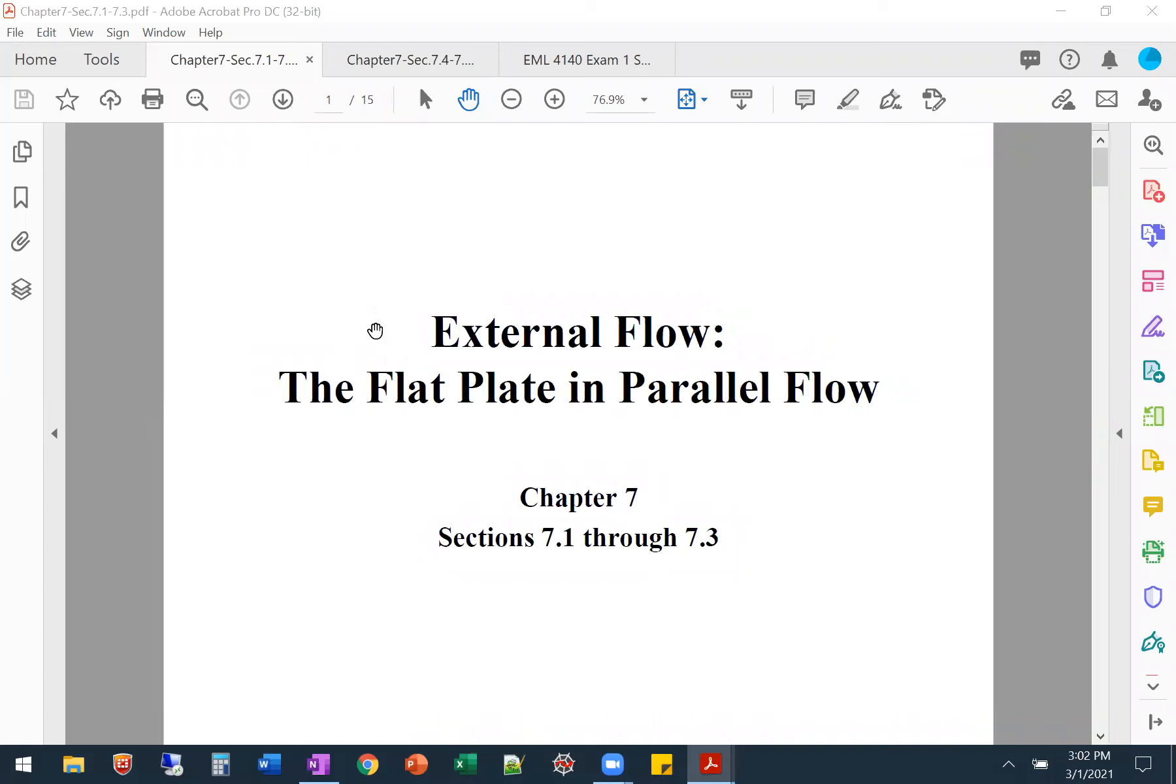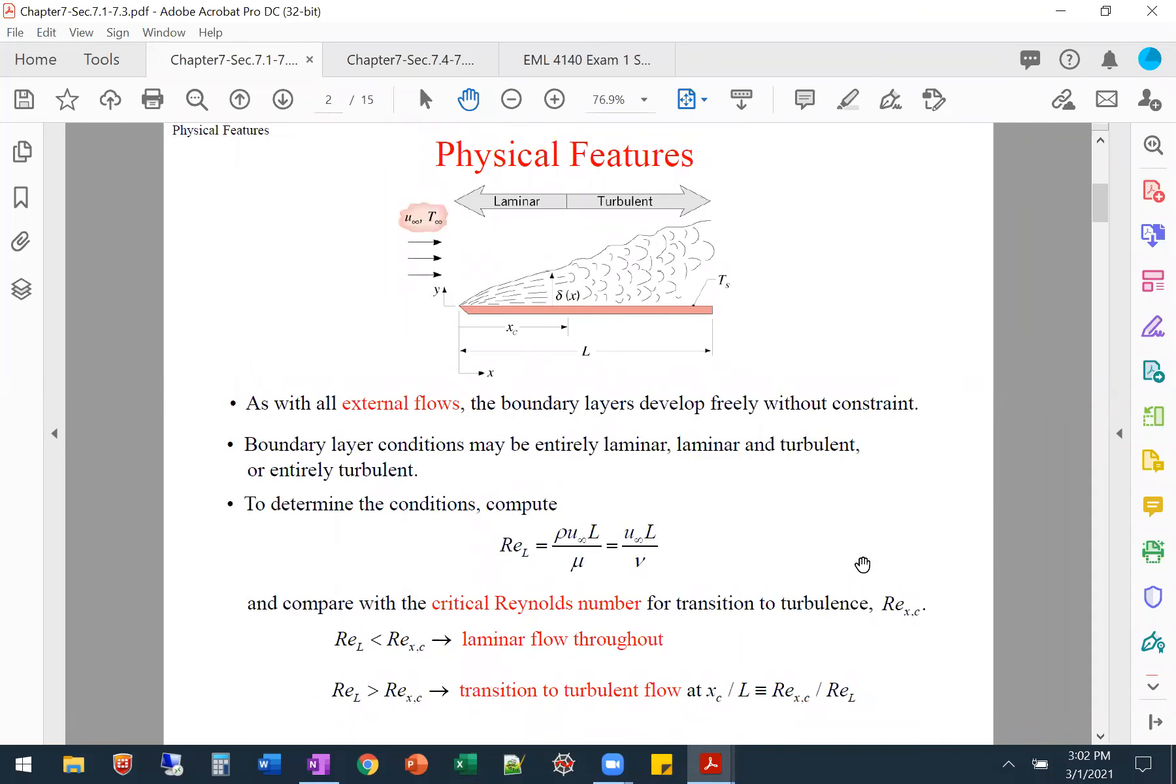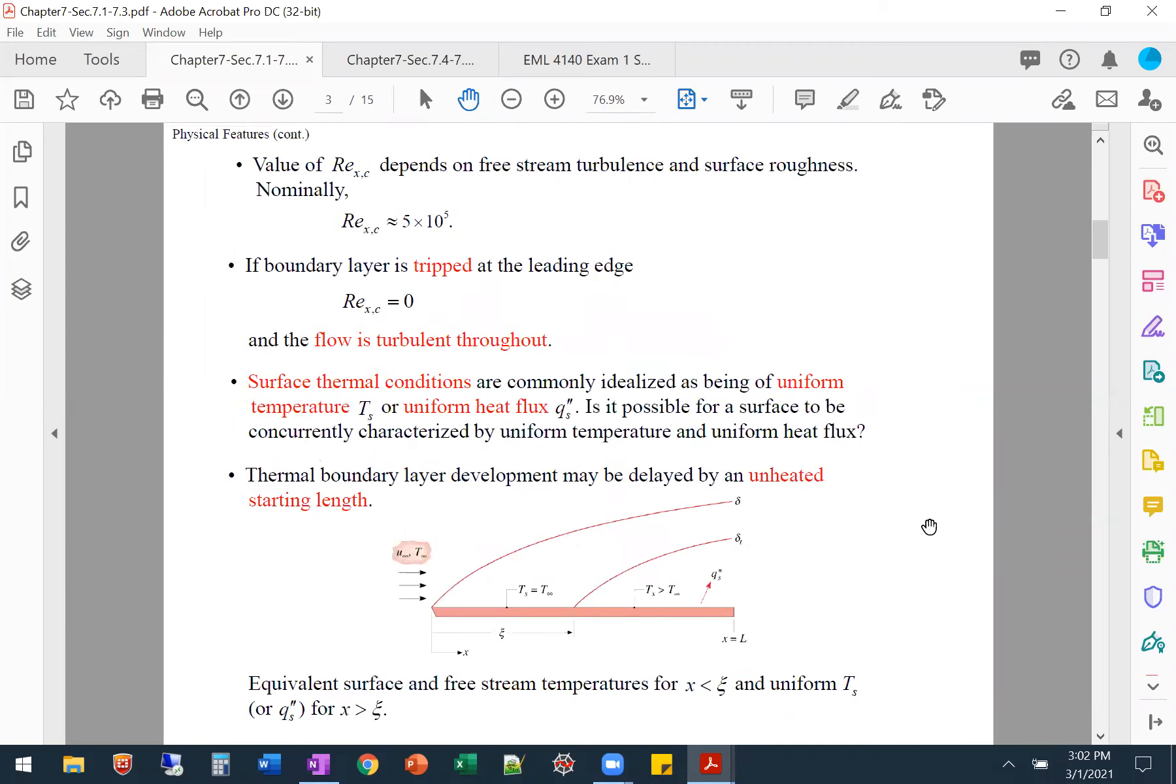Let's get started. In Chapter 7, it's external flow. We already covered this flat plate parallel flow, talked about Reynolds number for the transition between laminar and turbulent, where the flow can be tripped so it's turbulent the whole way, or where it transitions from laminar to turbulent. We also mentioned there could be an unheated starting length where the boundary layer for the thermal does not start growing until there's heating.